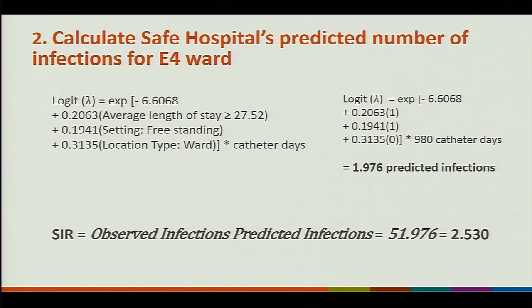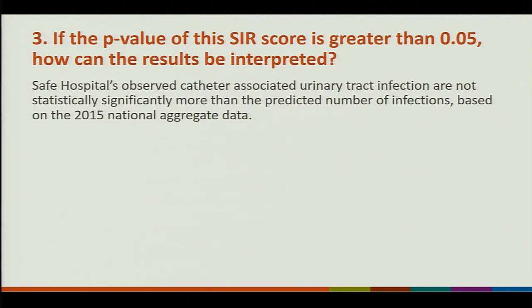If you didn't get 1.976 predicted infections and really want to know why, come find me and we'll go through it together. Note that on this slide the division signs were dropped, so after observed infections there should be a divide sign — divided by predicted infections. We had five observed infections divided by 1.976 predicted infections, giving an SIR score of 2.530. If the p-value of this SIR score is greater than 0.05, SAFE's hospital's observed catheter-associated urinary tract infections are not statistically significantly more than the predicted number of infections, based on the 2015 national aggregate data.